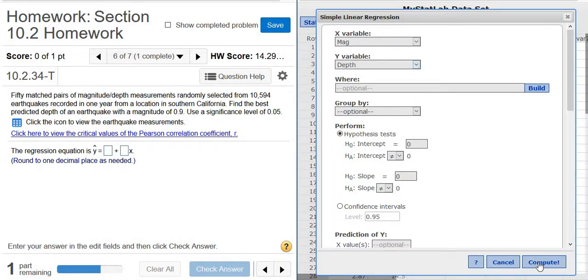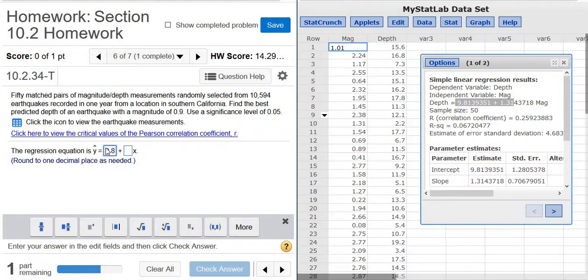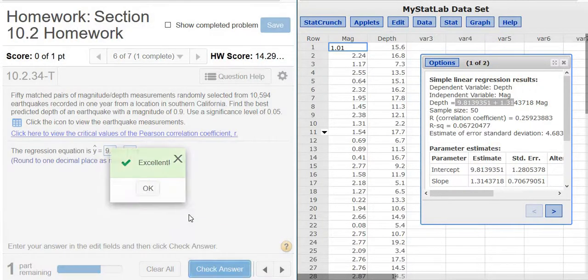Just click compute and there's the regression equation. So it wants one decimal, so it would be 9.8, so 9.8 and then 1.3. Quick check answer, good stuff.